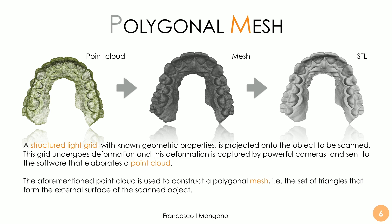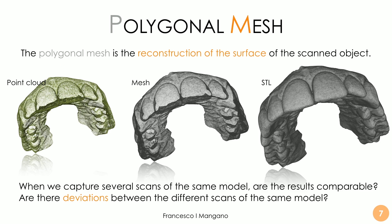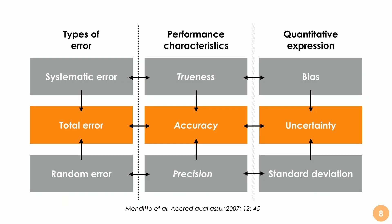The mesh is only a 3D reconstruction — it's not the object itself, but an approximation made of triangles. We can have different resolutions with different meshes depending on the number of points selected and the number of triangles generated by interpolation. When we capture several scans of the same model, the same patient, with the same scanner, the question is: are the results comparable? Are there deviations between different scans taken by the same operator on the same patient and the same model? This is precision. When we refer to the precision of an intraoral scanner, we refer to the random error. Precision, for the intraoral scanner, is an estimate of the random error.